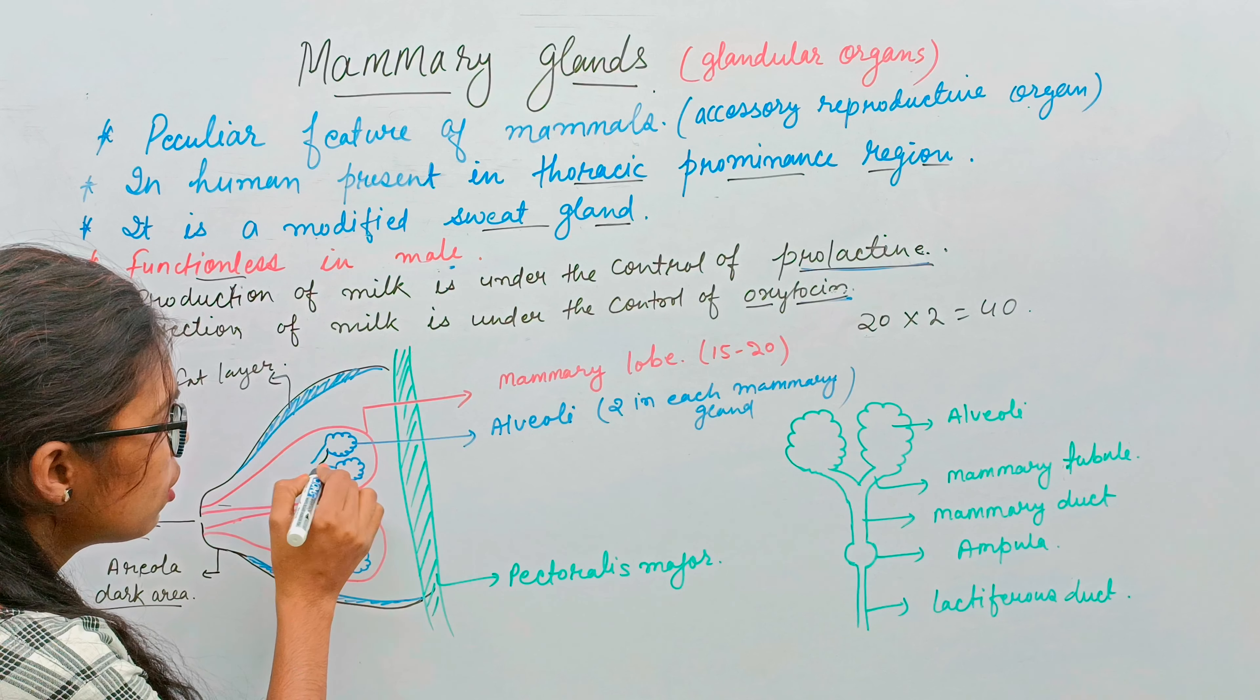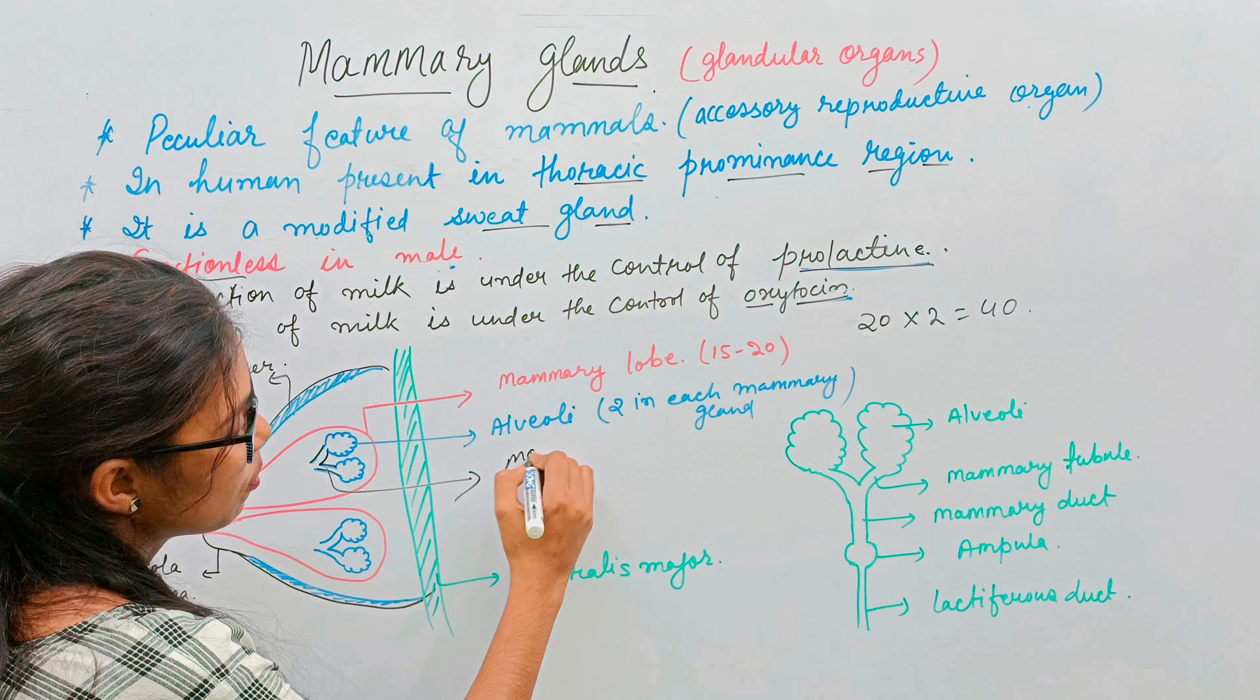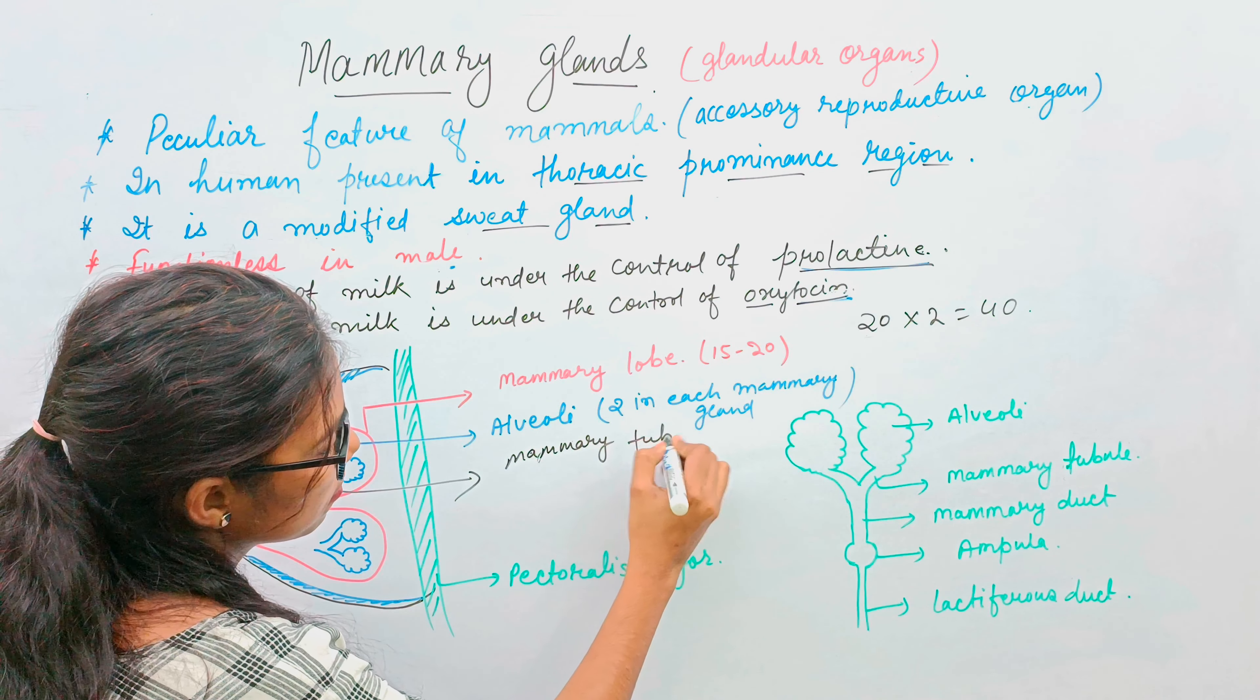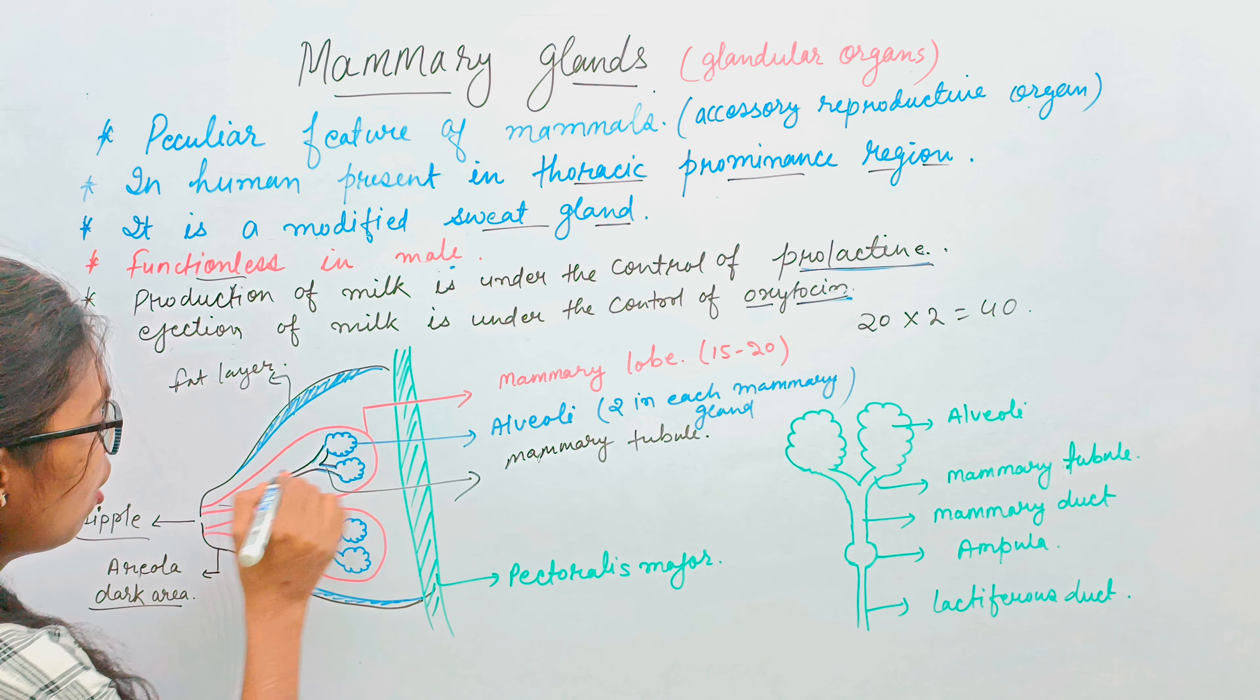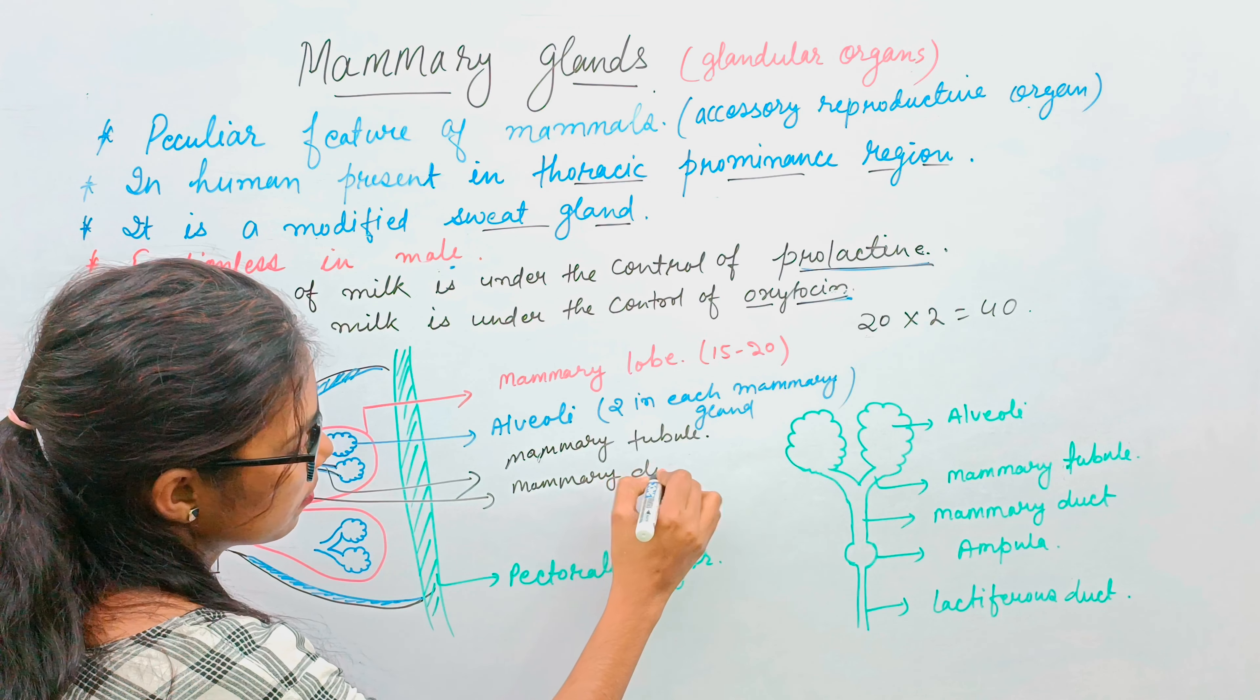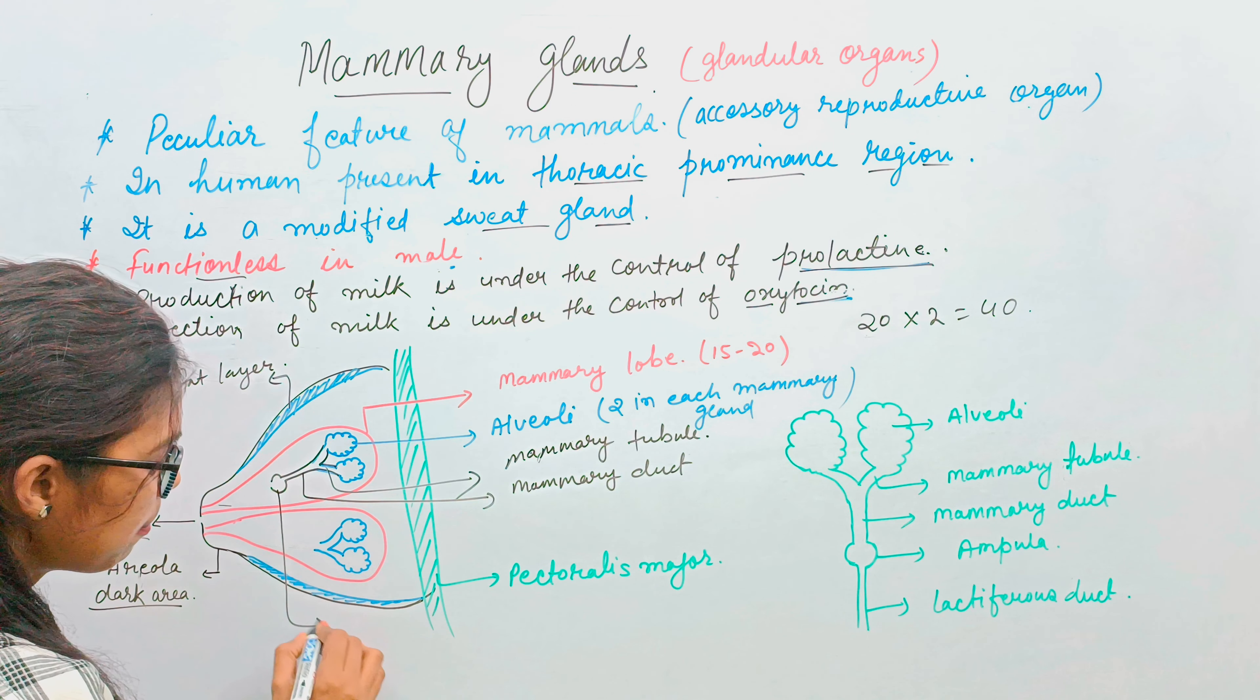From this alveoli, there is a small duct called a mammary tubule. This mammary tubule connects to a duct which is called a mammary duct. This mammary duct goes to a swollen part which is called ampulla.